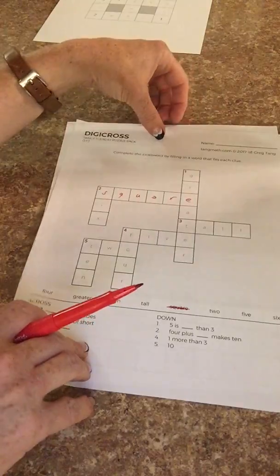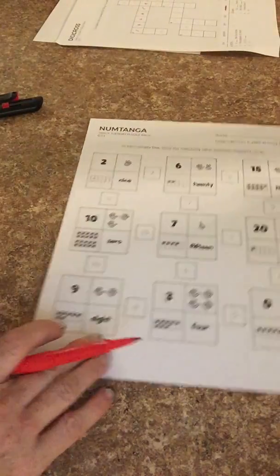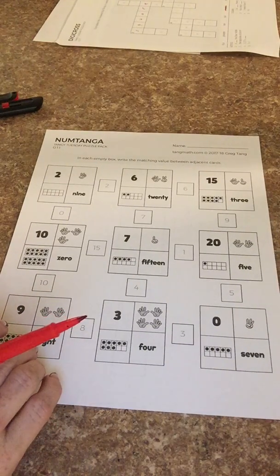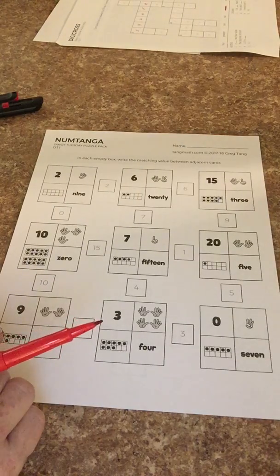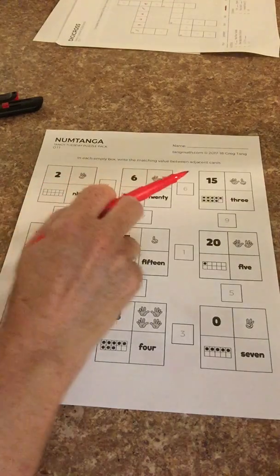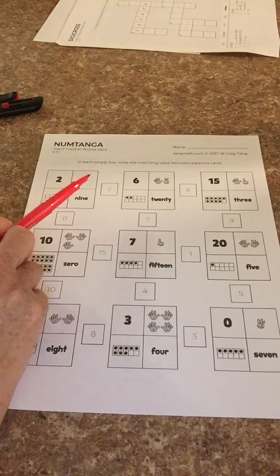Then we have Num Tanga, which again we do a lot in class. If you'd like to go online, your kids can practice it at the gregtangmath.com website. What you're doing here in these boxes is writing the matching value between adjacent cards.